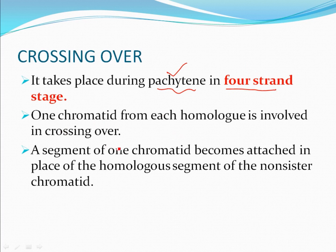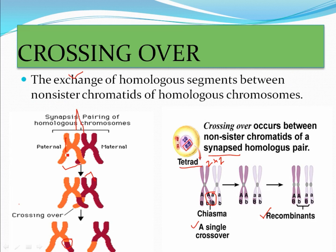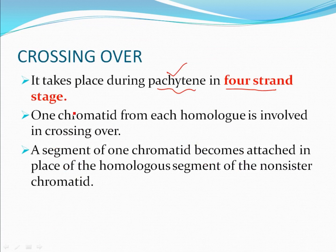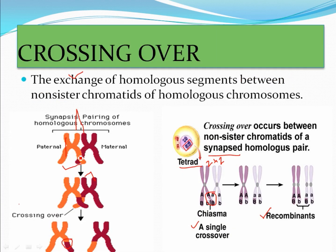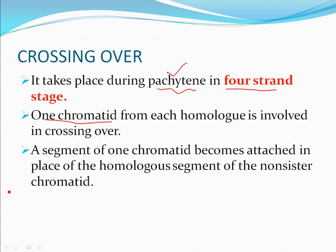One chromatid from each homologous chromosome is involved in crossing over — this is most important. This chromatid is not involved in crossing over; only these two chromatids participate. In one homologous chromosome, one chromatid is involved in crossing over and another chromatid is not involved. One chromatid from each homolog is involved, and a segment of one chromatid becomes attached in place of the homologous segment of the non-sister chromatid, as you can see in the diagram.